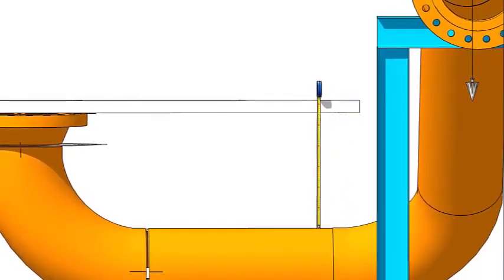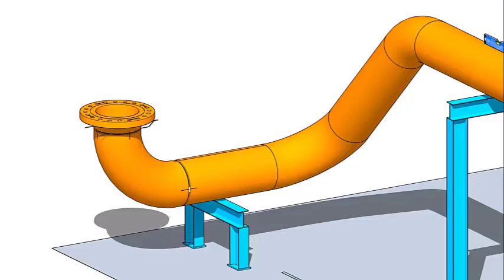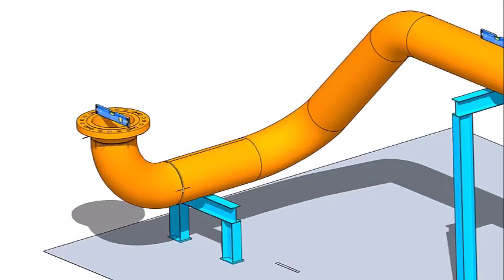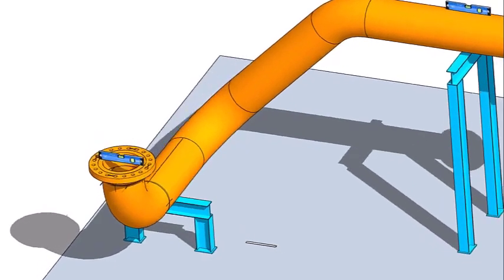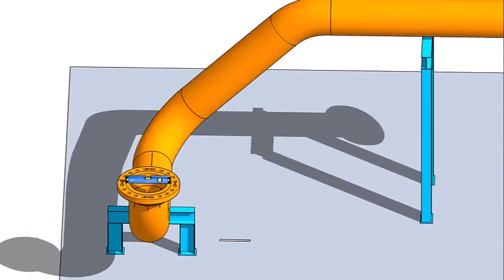If the measurements are equal, that means the face of the flange and the axis of the pipe are parallel. Tolerance may apply as per the procedure. Please watch my previous videos for piping fabrication tolerance.